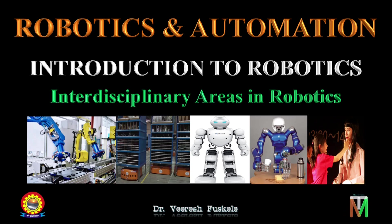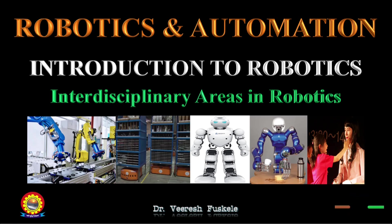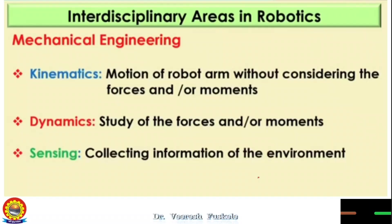Yesterday we discussed that robotics basically comprises of various core areas like mechanical and electrical. It has four independent modules: one is mechanical engineering, another is electrical electronics, and computer science engineering. There is general science also, which will have physics and mathematics predominant. Mathematics is very important.